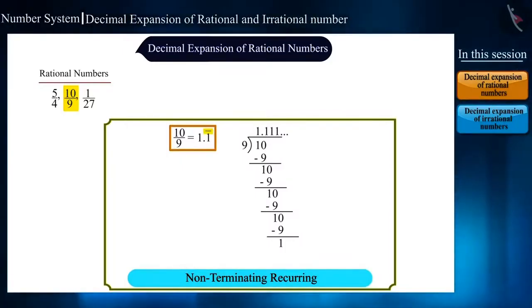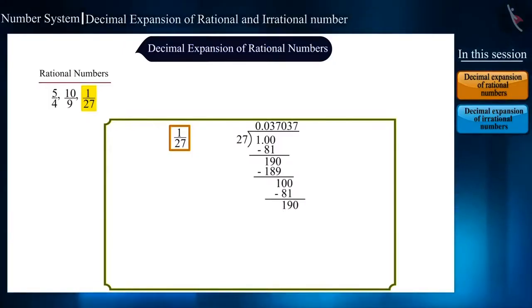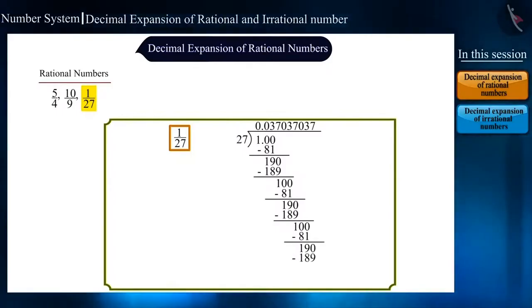If we look at the third example, 1 by 27. Here too, the remainder is not 0. If we look at this division carefully, after the third step, we are getting the same remainder again. If we solve this further, then the same three steps are being repeated.